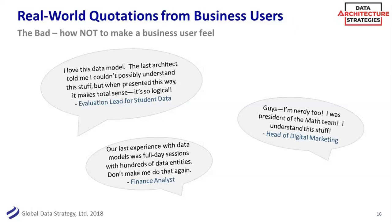The one on the right was actually a very extreme version of that, and it was so funny. This was the head of digital marketing — a very smart person with a mathematical background. Marketing is all about numbers. They were basically talking down to her, and she couldn't understand why — finally she was so frustrated she said, 'guys, I am nerdy too. I was head of the math team. I am a nerd.' She had to defend herself against not being nerdy enough. So don't do that. Most business people are rather intelligent — they just probably know slightly different skills than you do.